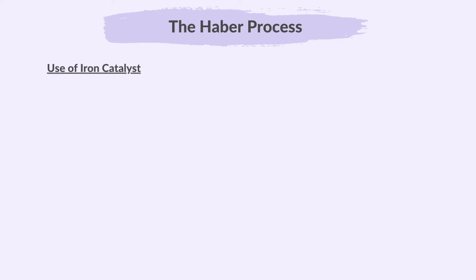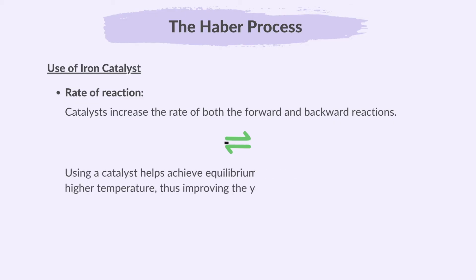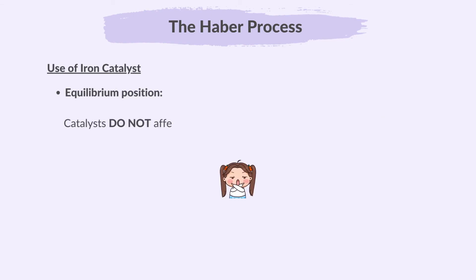The use of an iron catalyst: catalysts increase the rate of both the forward and backward reactions. Using a catalyst helps achieve equilibrium faster without the need for a higher temperature, thus improving the yield. Remember, catalysts do not affect the equilibrium position.